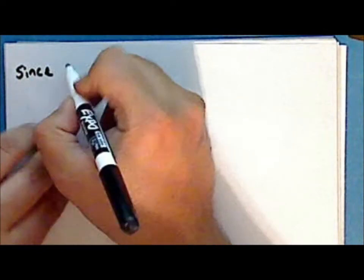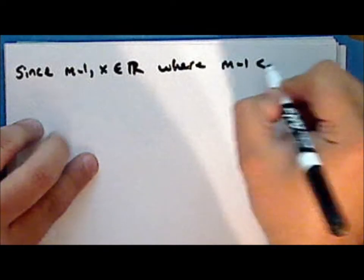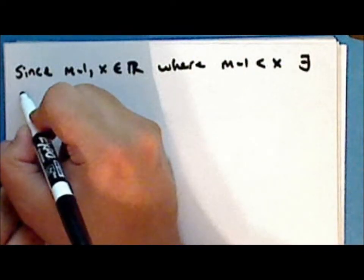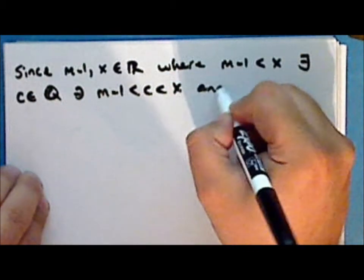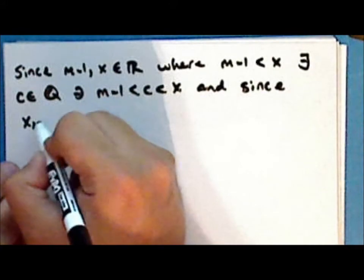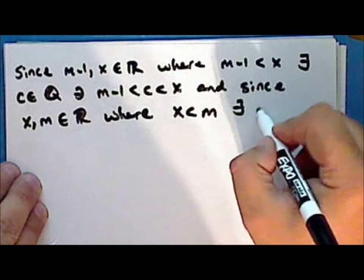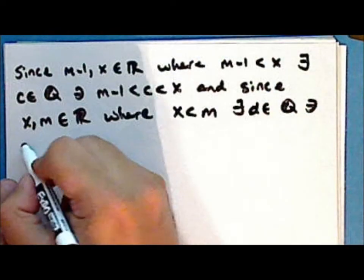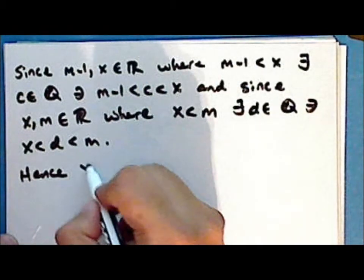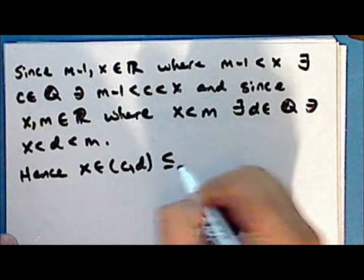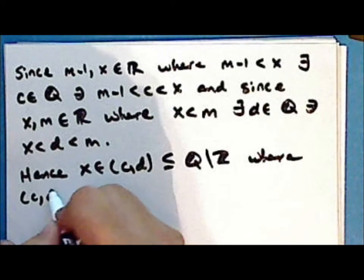Since M minus 1 and X are two real numbers where M minus 1 is less than X, there exists a rational number C such that M minus 1 is less than C, which is less than X. And since X and M are two real numbers where X is less than M, there exists a rational number D such that X is less than D, which is less than M. Hence the point X is in the open interval from C to D, which is a subset of the complement of the integers, where this interval is a basic open set.